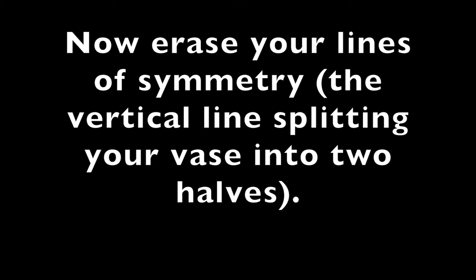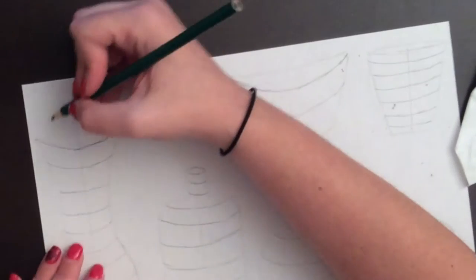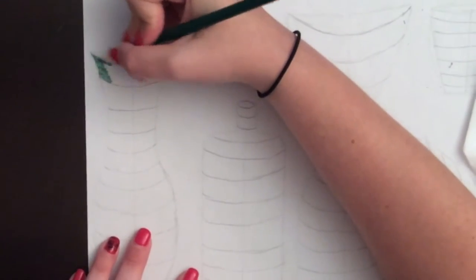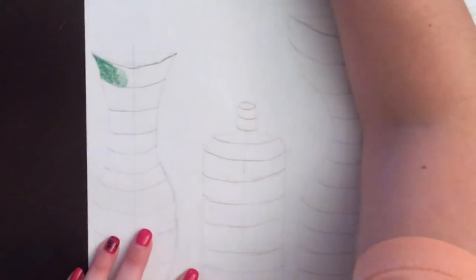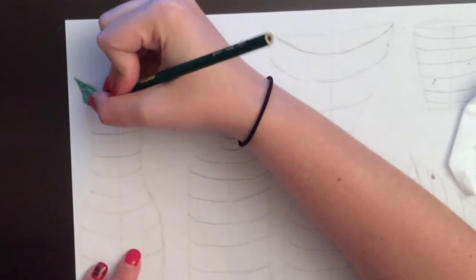You need to get rid of that so that it's not visible through some of the lighter shades that you're going to be using. And then you're choosing any two to three colors, and you're shading each stripe in one of those colors.